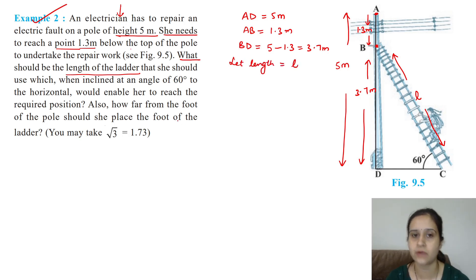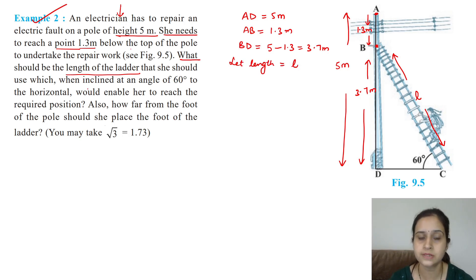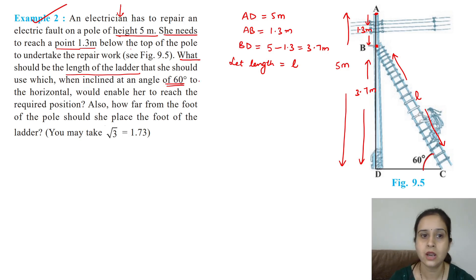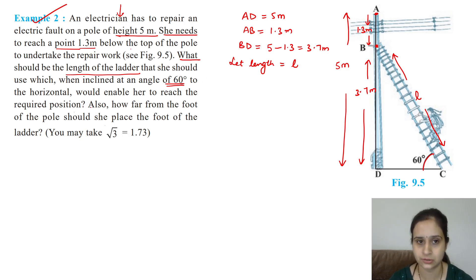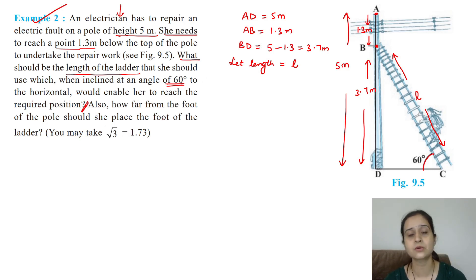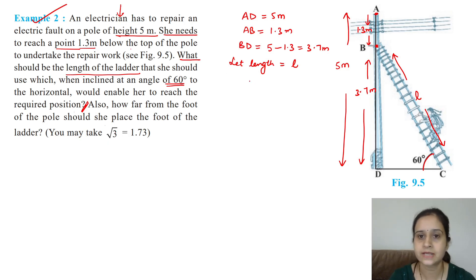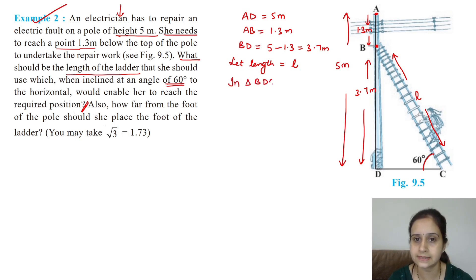We need to find the length of the ladder, which we call L. She should use a ladder inclined at an angle of 60 degrees to the horizontal to reach the required position. So first we will find out the length of the ladder, focusing on triangle BDC.